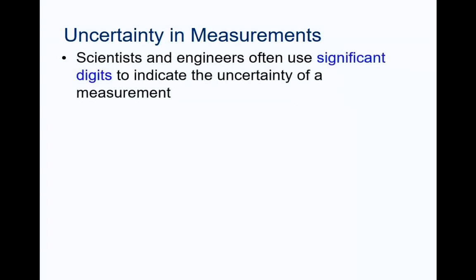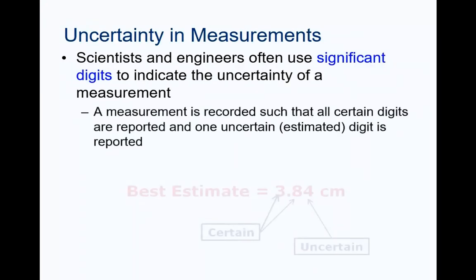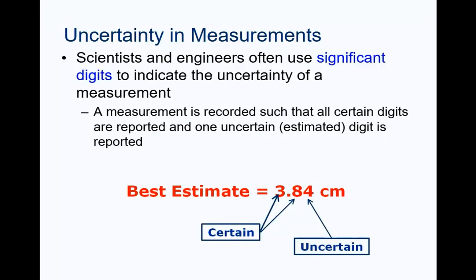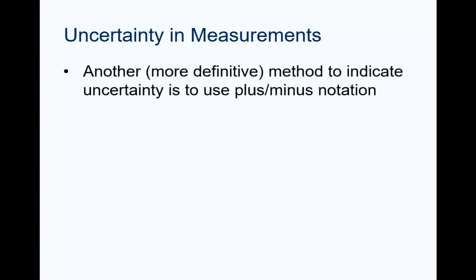One way to indicate uncertainty is through the use of significant digits. We use this method in previous activities. Using significant digits, the measurement value is written such that all the certain digits are recorded first, and the last significant digit represents a somewhat uncertain digit. In this case, if the measurement was recorded with a metric scale, the person recording this measurement is certain that the value is between 3.8 and 3.9 centimeters, and estimates that the reading is just under halfway between the 3.8 and the 3.9 on the scale.